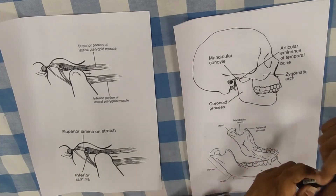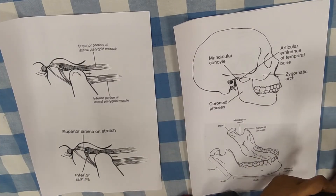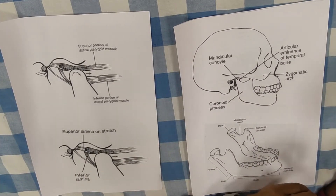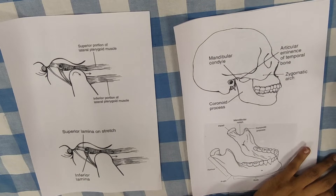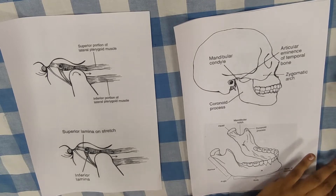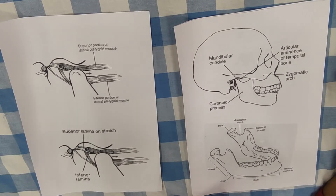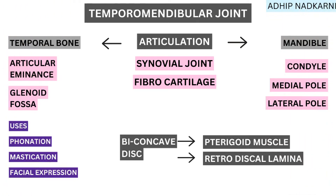Hello everyone. Today we will be discussing the temporomandibular joint, that is the TMJ. As you all know, it is one of the most used joints of our body. We use the temporomandibular joint for phonation, mastication, swallowing, and even for facial expressions. Today we will briefly cover the anatomy of the temporomandibular joint and then look at the movements possible around this joint.